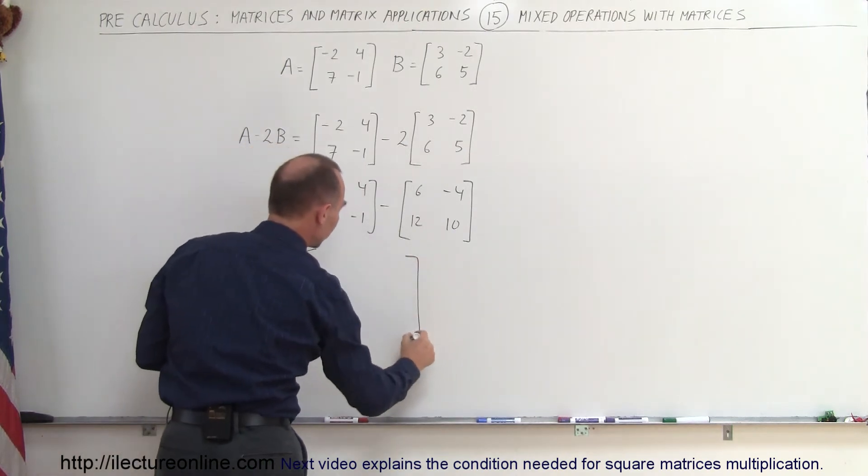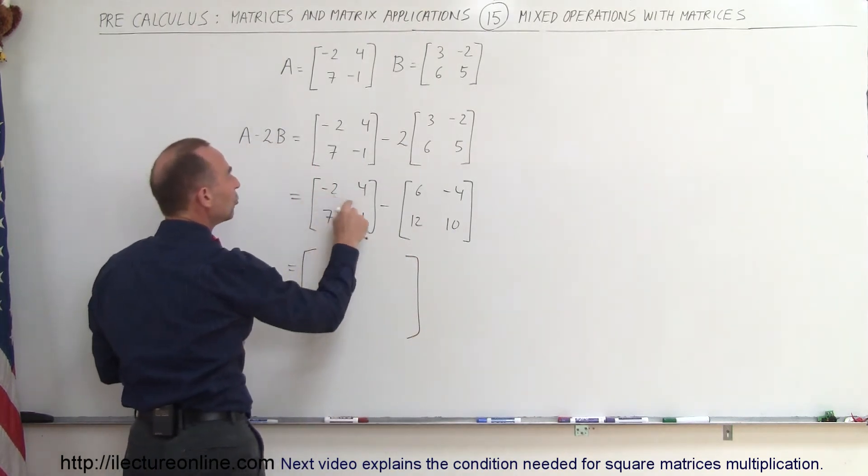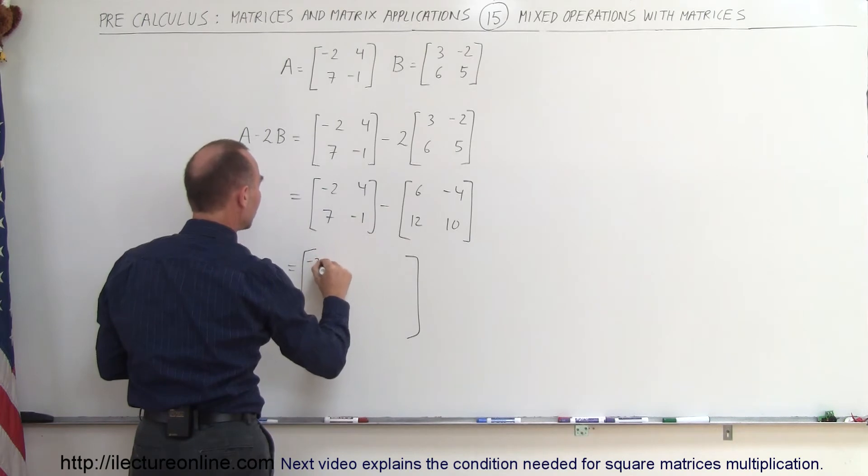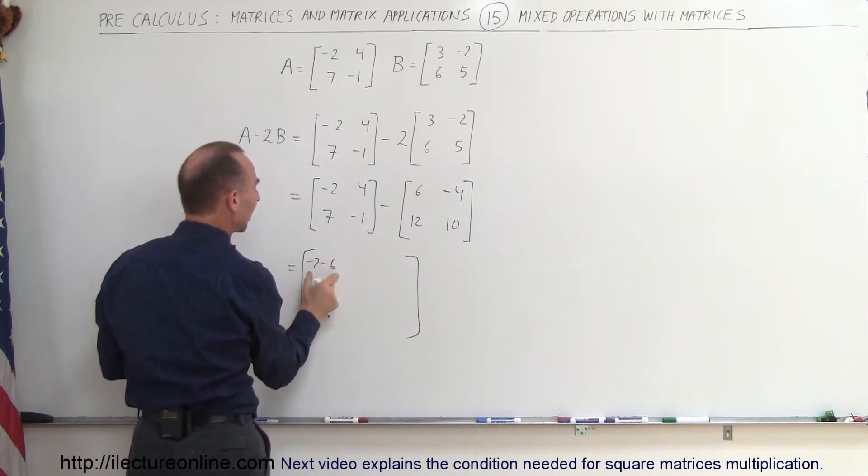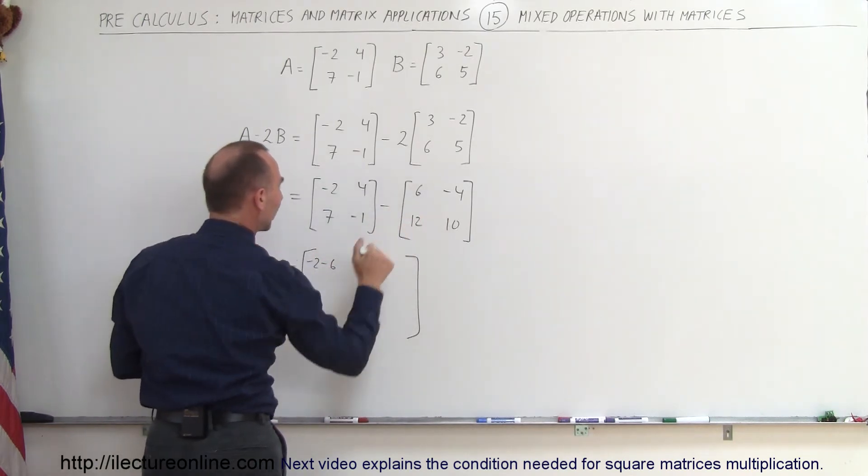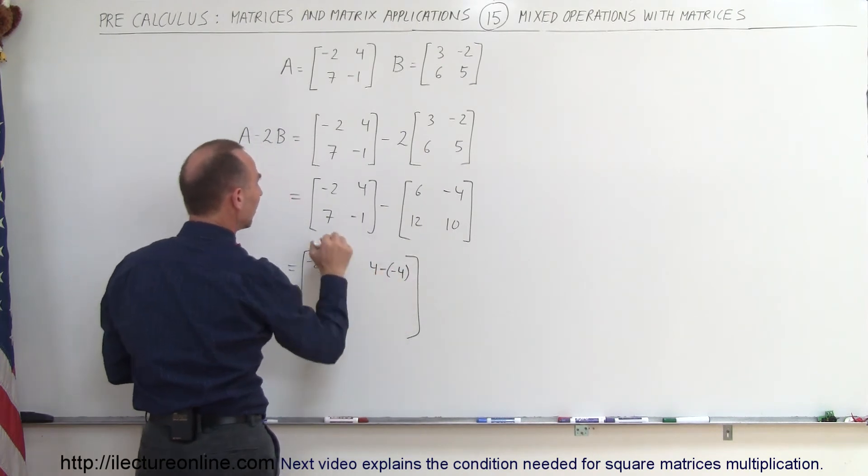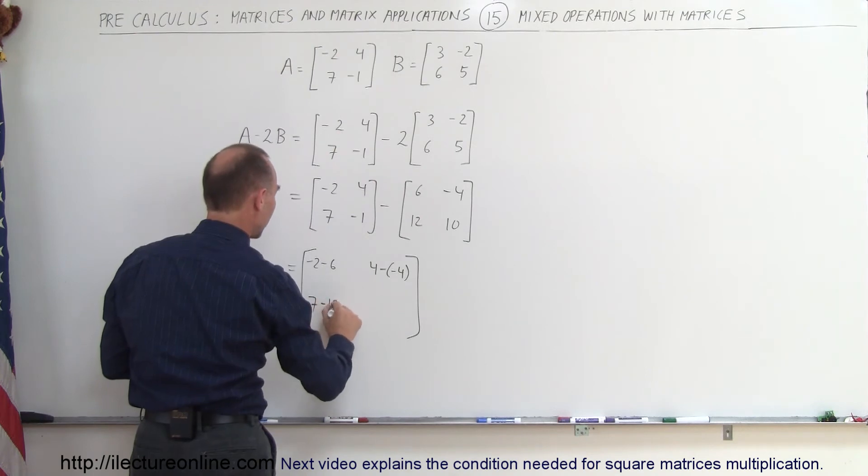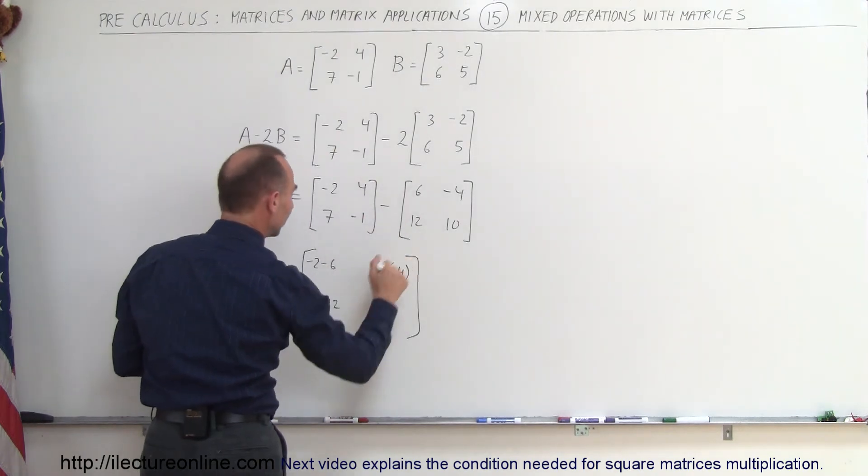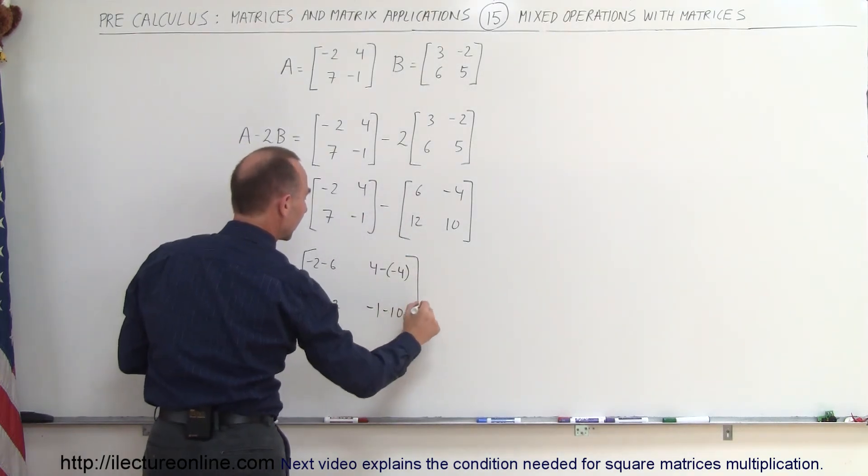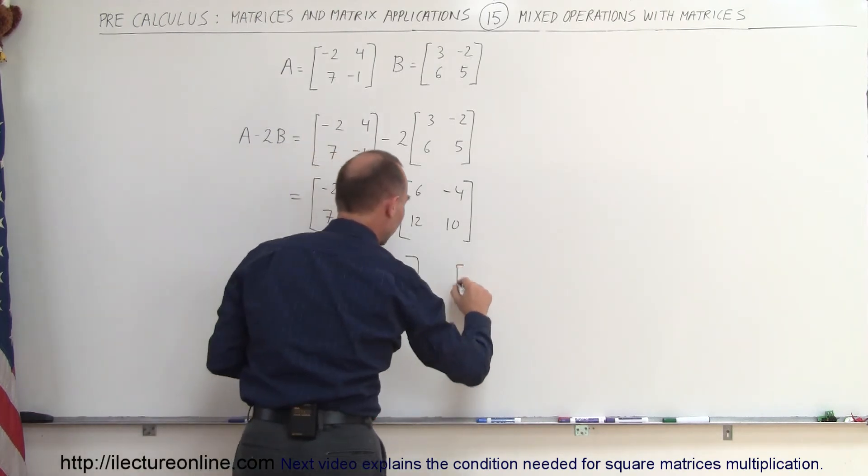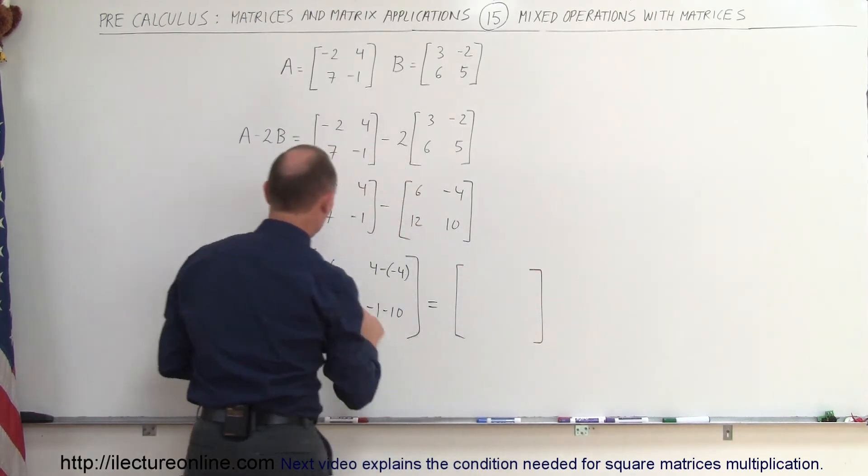I'll show you the steps so it's minus 2 minus 6 which becomes the element up here, 4 minus negative 4 which is the element up here, 7 minus 12 and minus 1 minus 10, and then if we simplify that we get the following result.